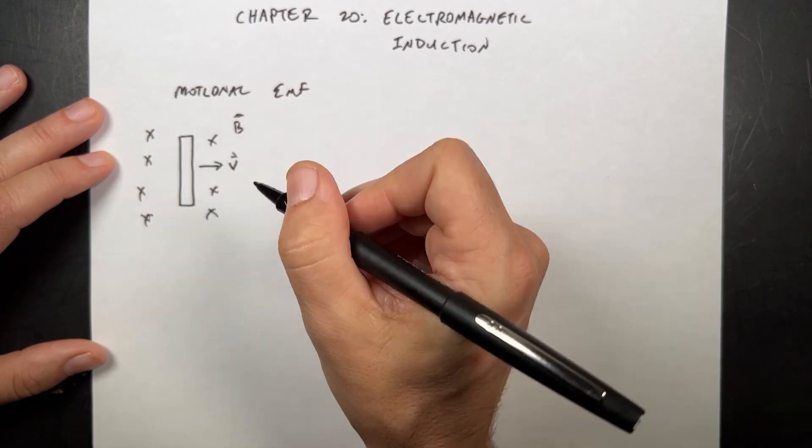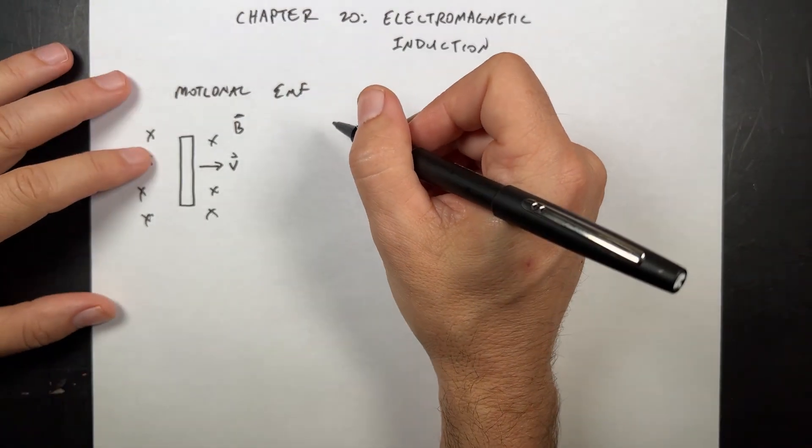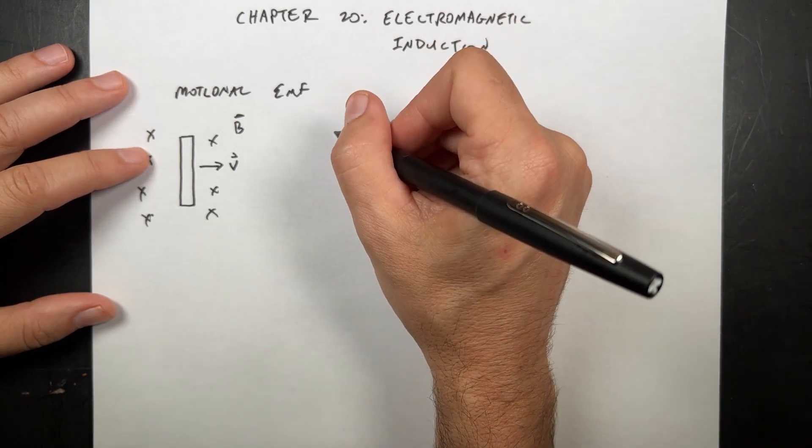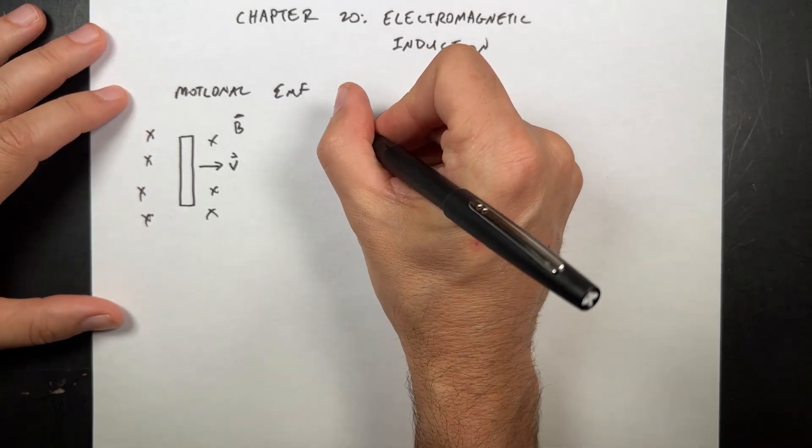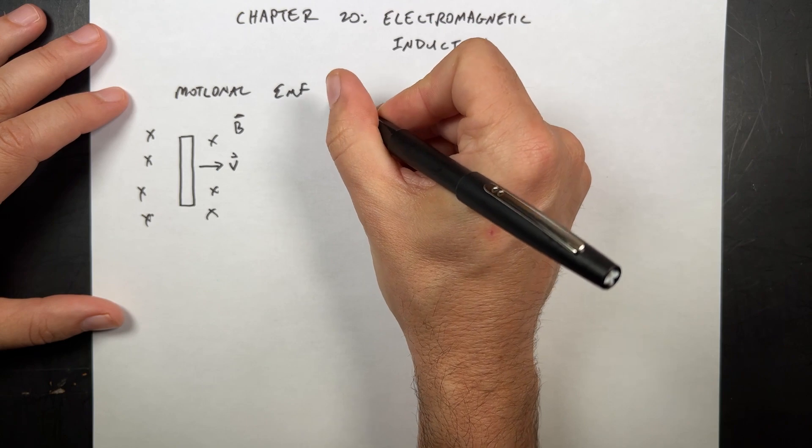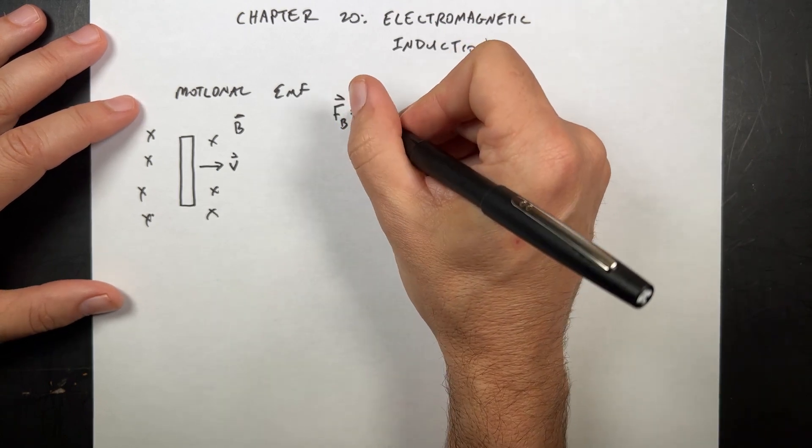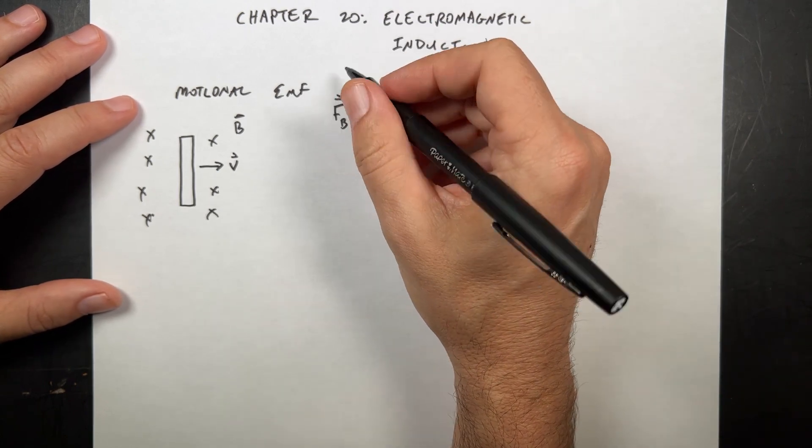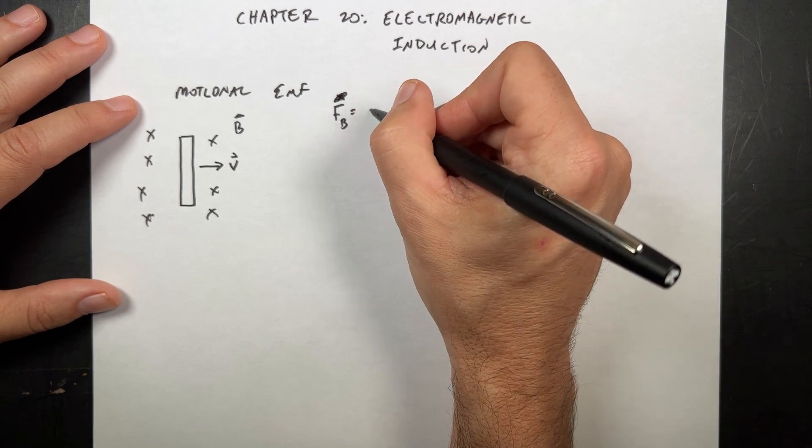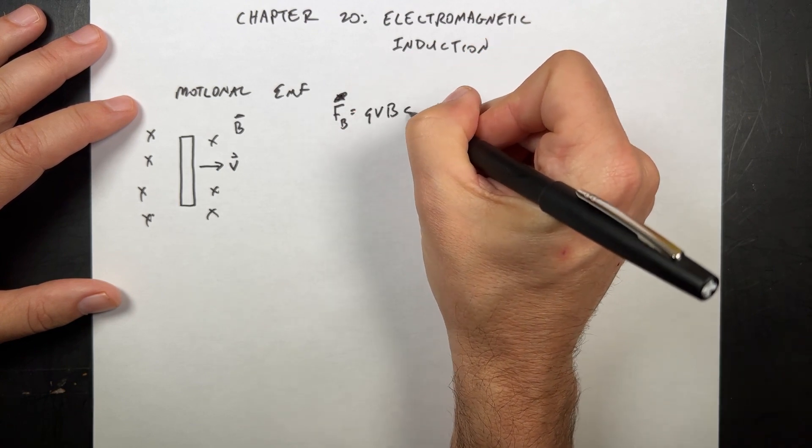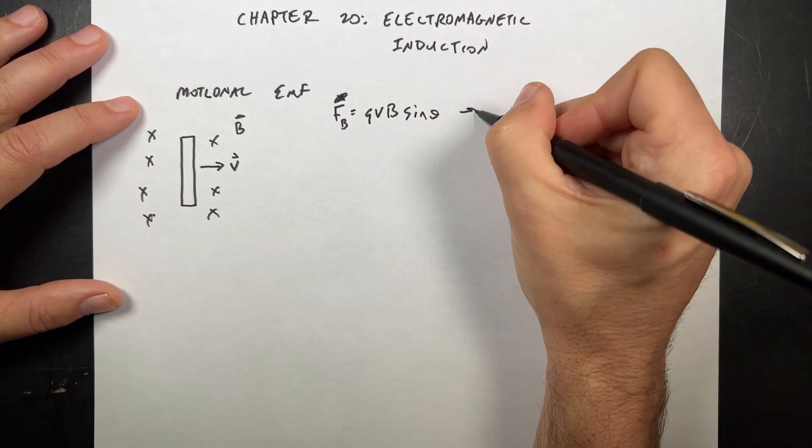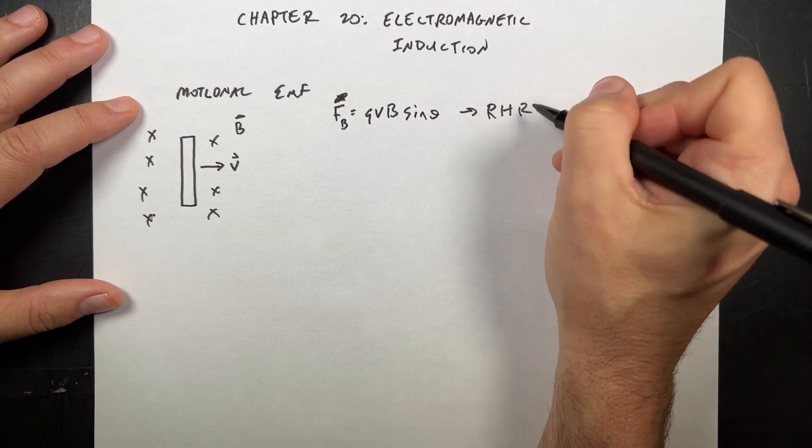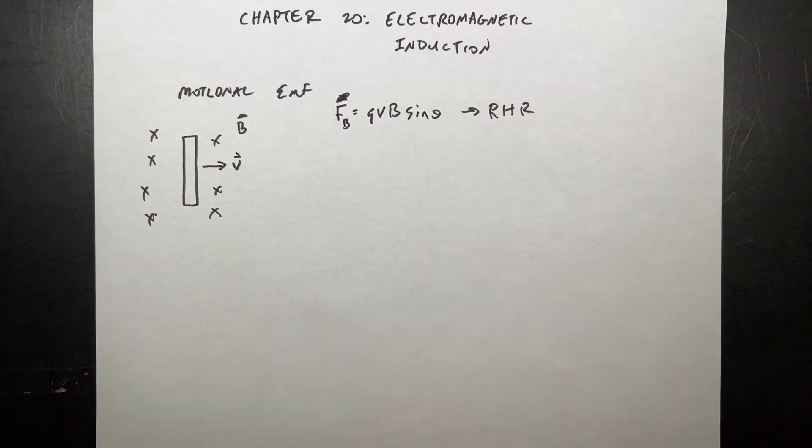So if you recall, charges experience a force when they're moving. FB is equal to, the magnitude, QVB sine theta. And then we have to use the right-hand rule to find the direction of that force.